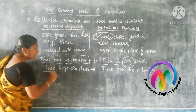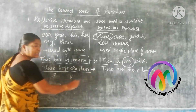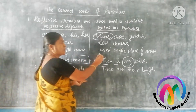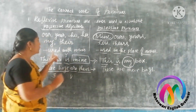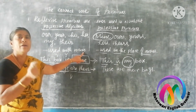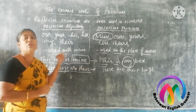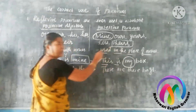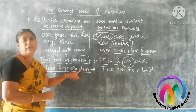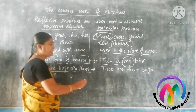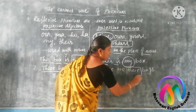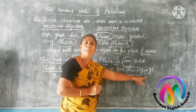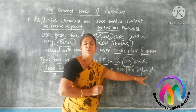Let us see another example. 'These bags are theirs' — 'theirs' is a possessive pronoun, used in the place of the noun. Compare with 'These are their bags' — the word 'their' is a possessive adjective, used with the noun 'bags.' Possessive adjective is always used with a noun, never used in the place of the noun.